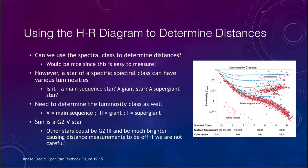What we want to look at first is whether we can use the spectral class — the O, B, A, F, G, K, or M — to determine distances. This would be a great thing since it is very easy to measure the spectral class. All we need to do is have a star that is bright enough to get a spectrum and classify it.